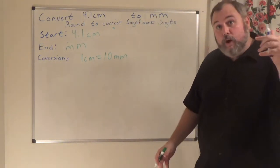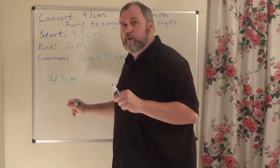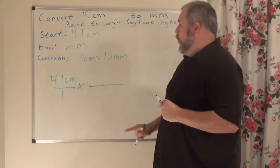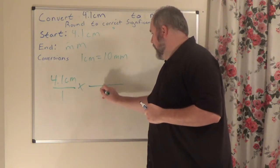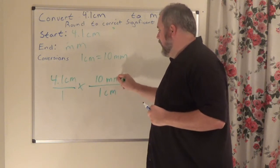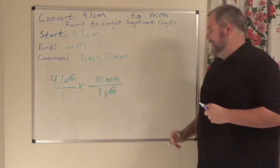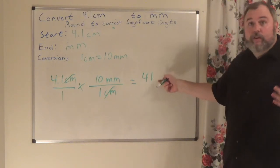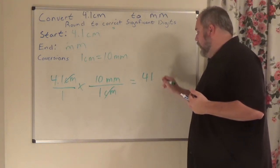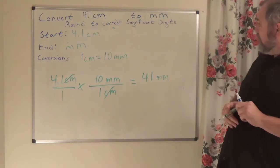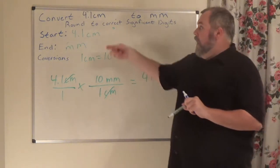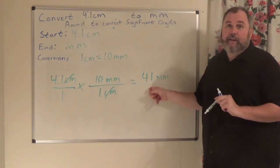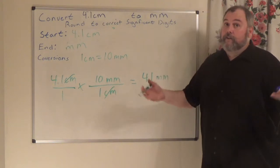Same thing we've been doing. 4.1 centimeters over one. Times one conversion factor. Since I'm trying to get rid of centimeters, centimeters goes on bottom; millimeters goes on top. Centimeters cancels out. 4.1 times 10 is 41. 41 divided by 1 is 41 millimeters. Round to correct significant digits: I started with 4.1, which has two significant digits. My answer 41 also has two significant digits, so no further rounding needed. Final answer: 41 millimeters.